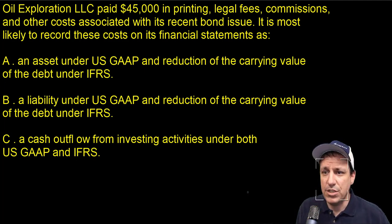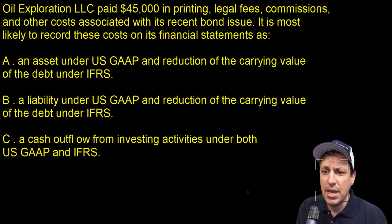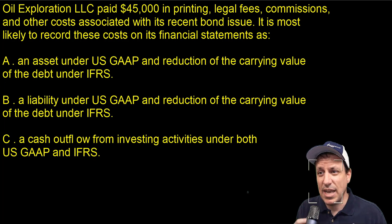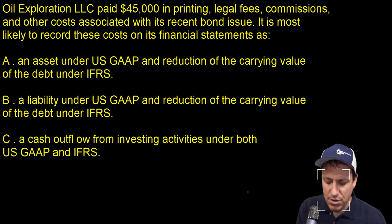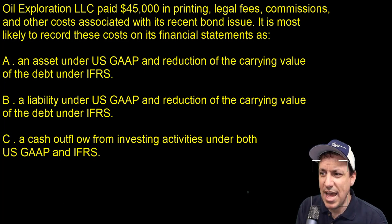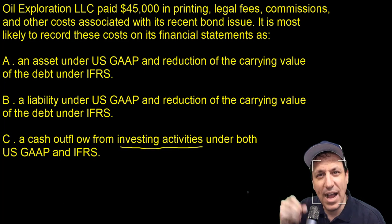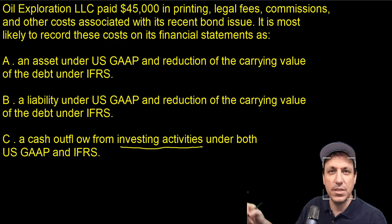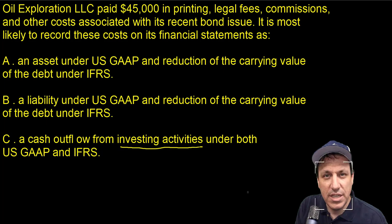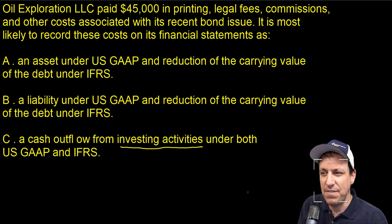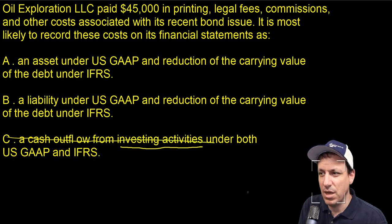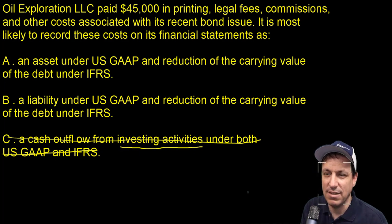There are a couple different ways you can do it, so let's look at some of the answers. Starting with C: it says we're going to recognize those expenses as a cash outflow from investing activities under both US GAAP and IFRS. The problem is we're issuing debt — investing activities is when we buy or sell assets for a business. Issuing debt is a financing activity, not investing. So we can eliminate C.